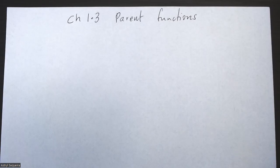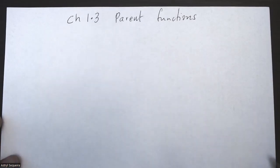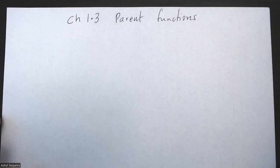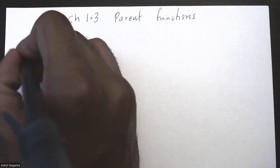All right, so in this video we are going to do a review of Chapter 1.3, which is basically the properties of parent functions. This is going to be an extremely quick and easy video. Basically all you have to know in this chapter is the basic five parent functions in chapter number one, which is a linear function.